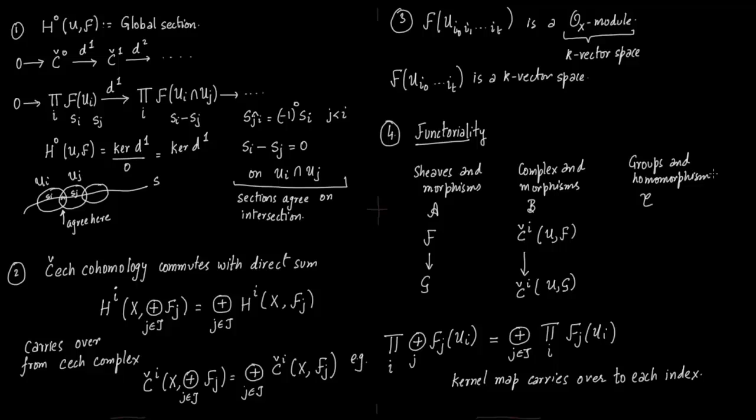And then from there we can pass to another category which is groups and group homomorphisms. So we have these cohomology groups associated with sheaf F and cohomology groups associated with sheaf G. The U here is nothing but the cover of the topological space X. So U is a bunch of sets.